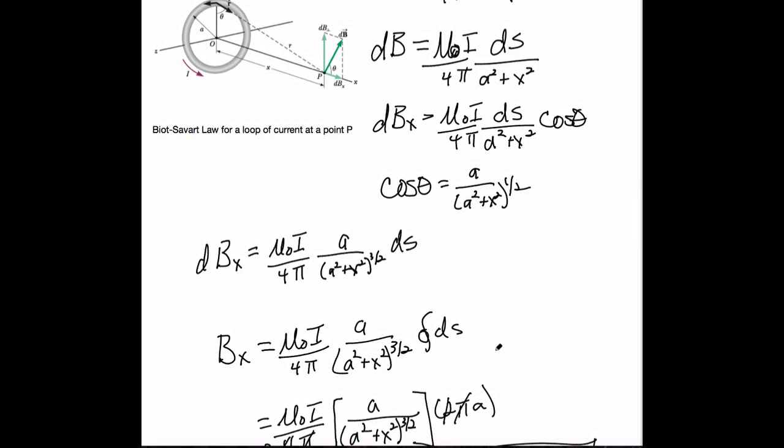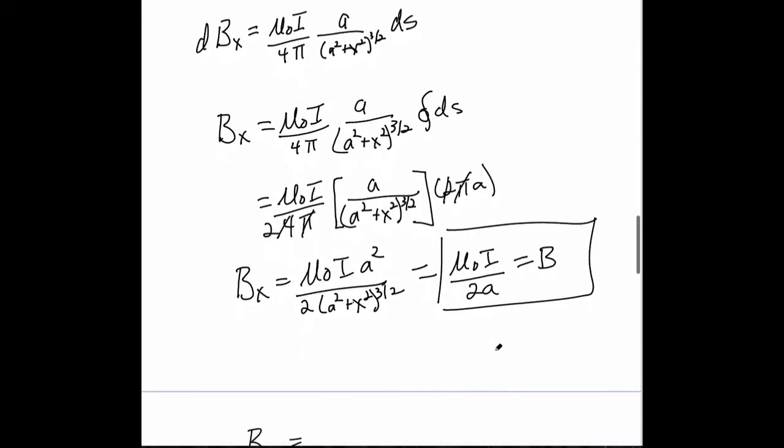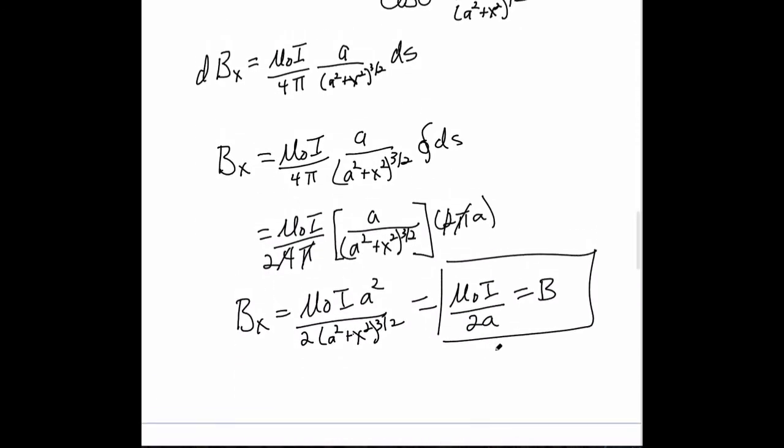And this is a really important result because we're going to use solenoids to do, they do many things. You can make magnetic fields, you can use them as transformers, we can make electromagnets, there's so many different things you can do with a solenoid. So that's what this expression has found. Okay, cool.